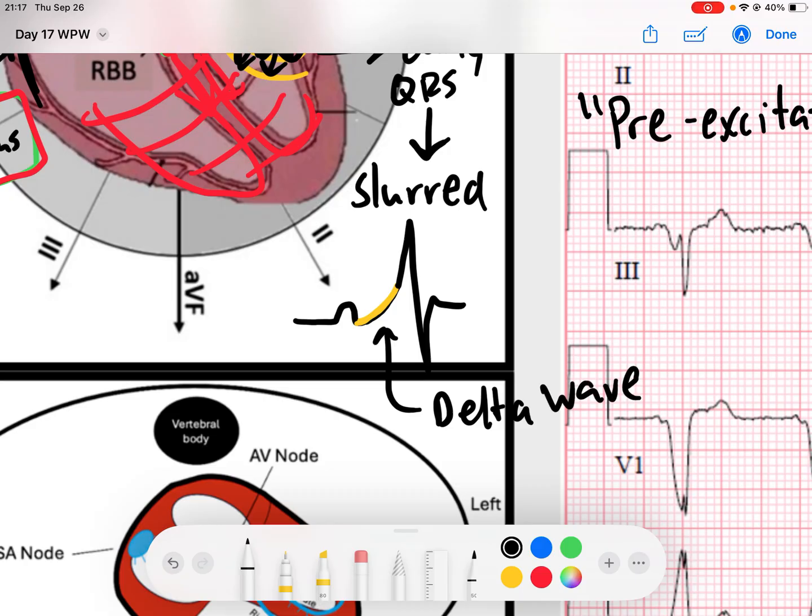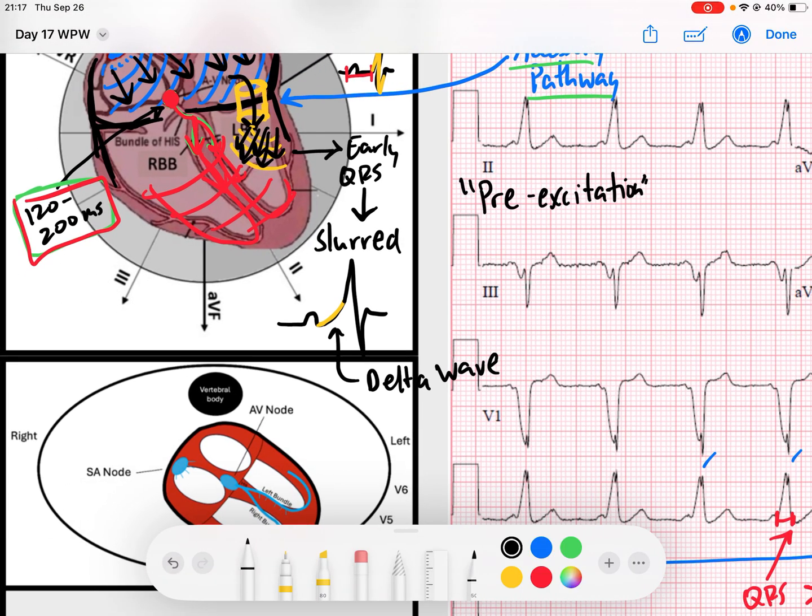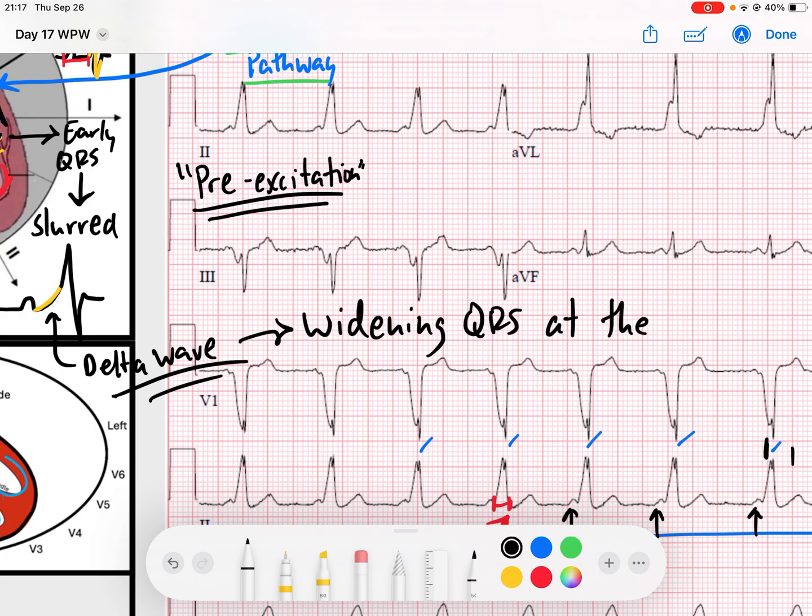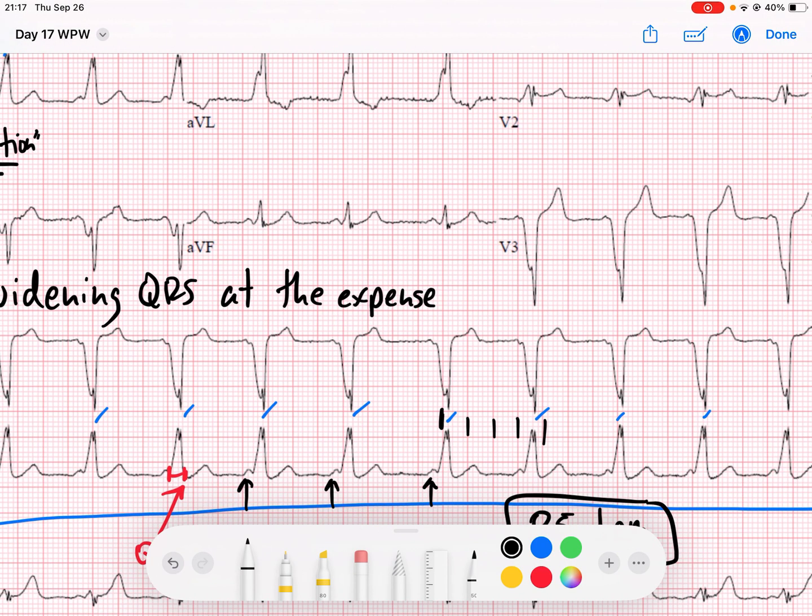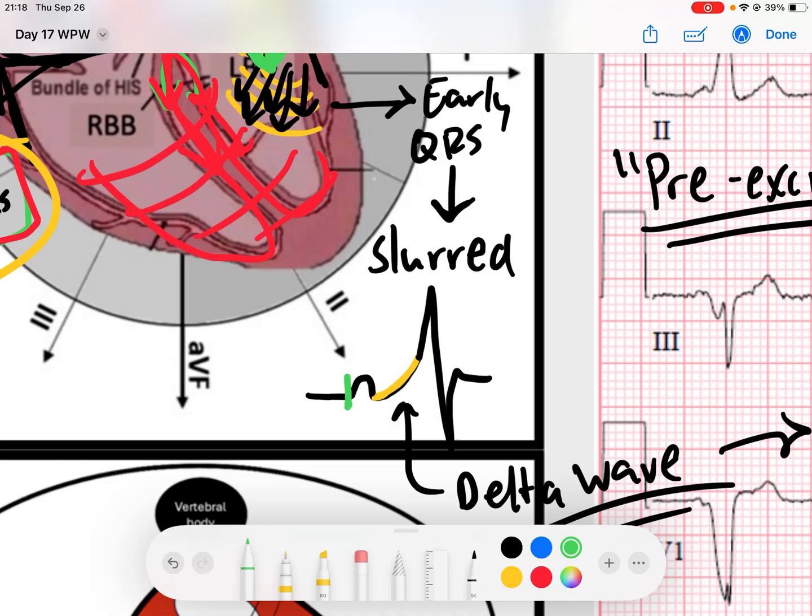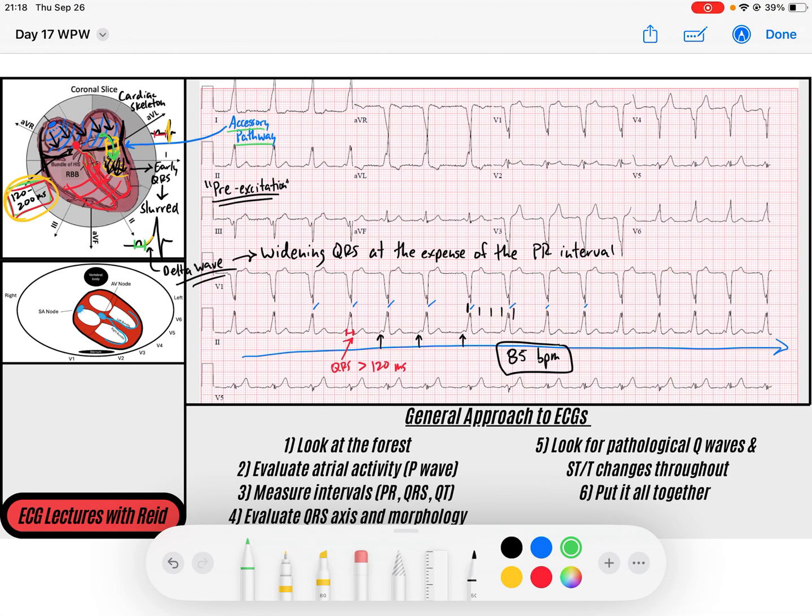So what do we get in Wolf-Parkinson-White? We're going to have sinus rhythm. We're going to have a delta wave representing ventricular pre-excitation. And what's that going to cause? That's going to cause widening of the QRS. But at the expense of the PR interval. This is a really important concept. Because remember, the PR interval is representing AV delay by 120, 200 milliseconds. But we're actually getting forces that are slipping around that AV delay. So my PR interval is, look how shorter my PR interval is because of that delta wave. So we're going to get widening of the QRS at the expense of the PR interval.